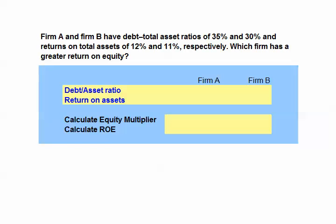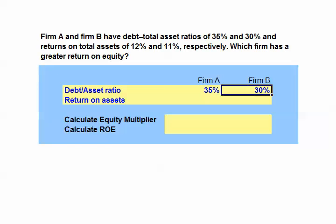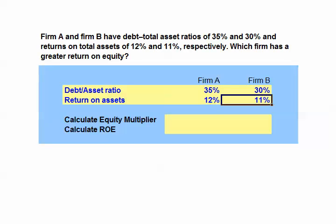Firm A and Firm B have debt to total asset ratios of 35% and 30% and returns on total assets of 12% and 11% respectively. Which firm has a greater return on equity?